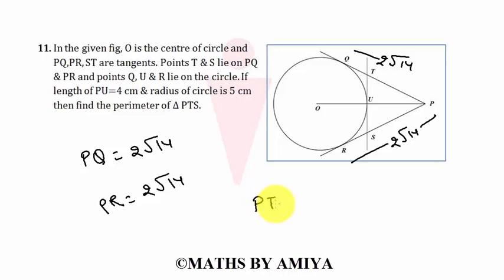But we need to find the perimeter. The perimeter of PTS is PT plus TS plus PS. Can we split TS into TU plus US plus PS? Because TS is TU plus US. Can we write PT plus TQ.